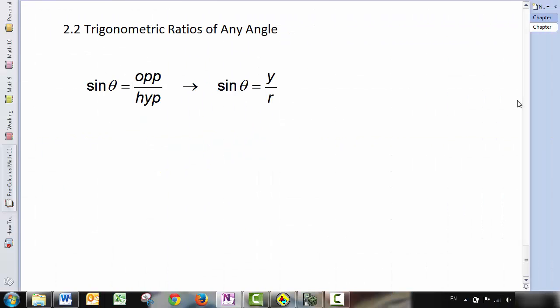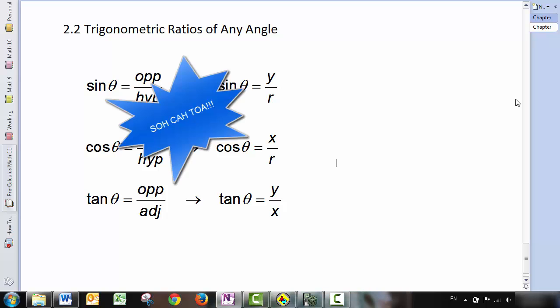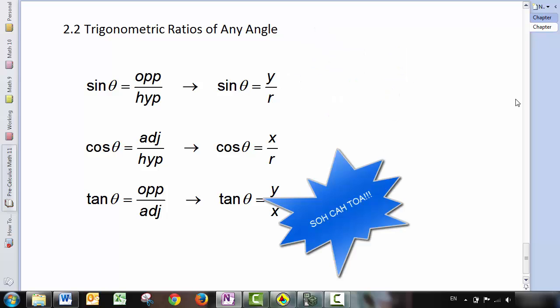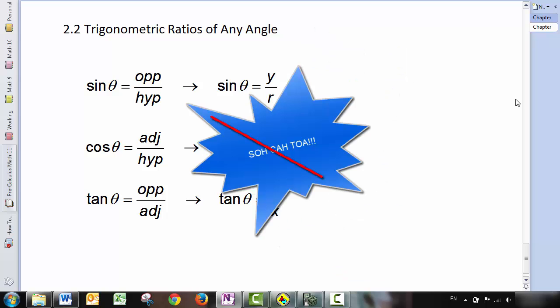So for starters, sine is no longer opposite over hypotenuse. Sine theta is now Y over R. Likewise, cosine theta no longer adjacent over hypotenuse, but now cos theta is X over R. And tan theta stops being opposite over adjacent and becomes Y over X. Now, for those of you who've been addicted to using SOHCAHTOA, perhaps it's time to upgrade your acronym to Sir Kicks or Dicks.